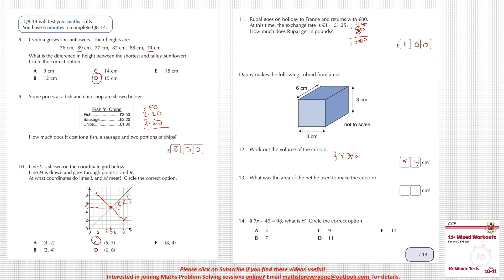The next part asks for the area of the net — the surface area. That is: 2 × (3 × 6) + 2 × (3 × 3) + 2 × (6 × 3) = 2 × 18 + 2 × 9 + 2 × 18 = 36 + 9 + 36 — wait, let me recompute: 2 × (18 + 9 + 18). That gives 36 + 9 = 45, and 2 × 45 = 90. So the surface area is 90.